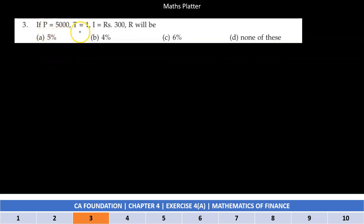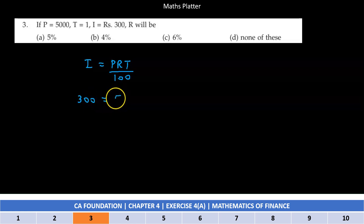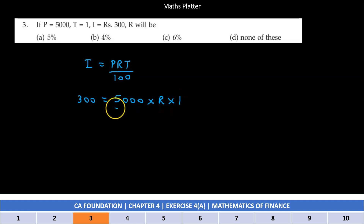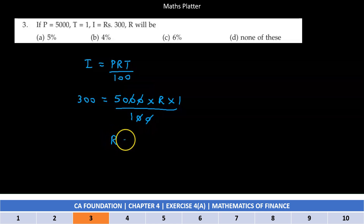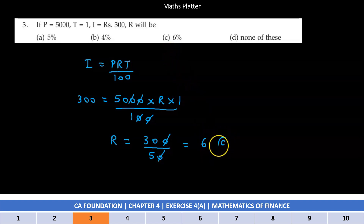If P is 5000, T is 1, and I is 300, then R will be? We know that I is equal to P into r into t upon 100. I ki value di hai 300, principal hai 5000, T hai 1, divided by 100. The two zeros cancel out, so R will be 300 divided by 50, which is 6. The answer is 6% per annum, which is Option C.